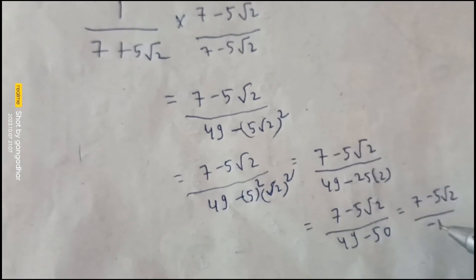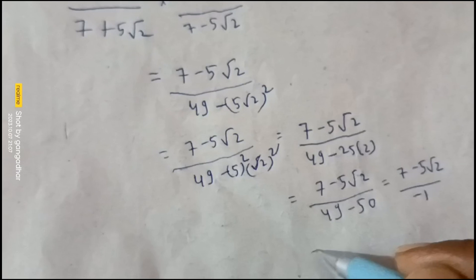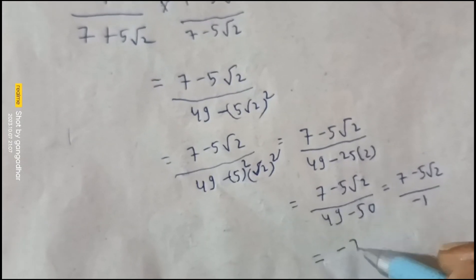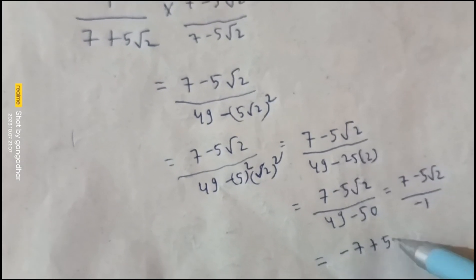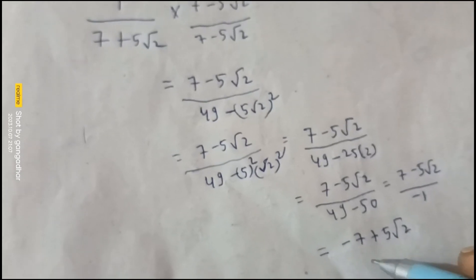Forty-nine minus fifty is minus one, so our answer is minus seven plus pi root two. That's our final answer.